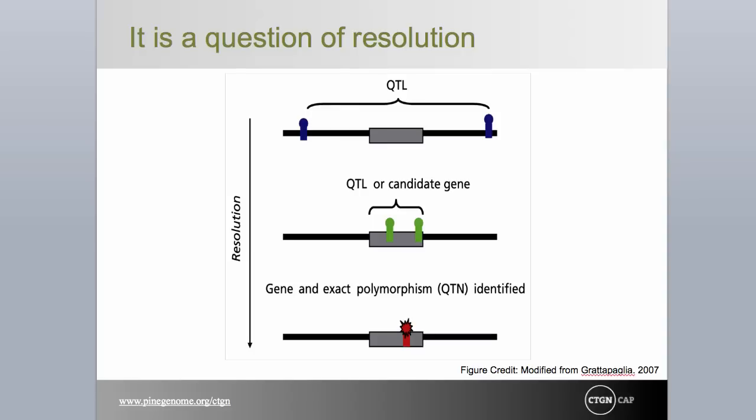We call upon this cartoon to illustrate the distinction between the approaches to complex trait dissection. In the figure, the gray rectangle represents a gene situated along a chromosome, and the little symbols are markers or mutations. For family-based QTL mapping, flanking markers within some reasonable proximity of the QTL will suffice for prediction. Association genetics seeks to find markers that are in much greater LD with the QTL, preferably within the gene responsible and near the causal polymorphism itself. A causal mutation is denoted as a QTN, or quantitative trait nucleotide.